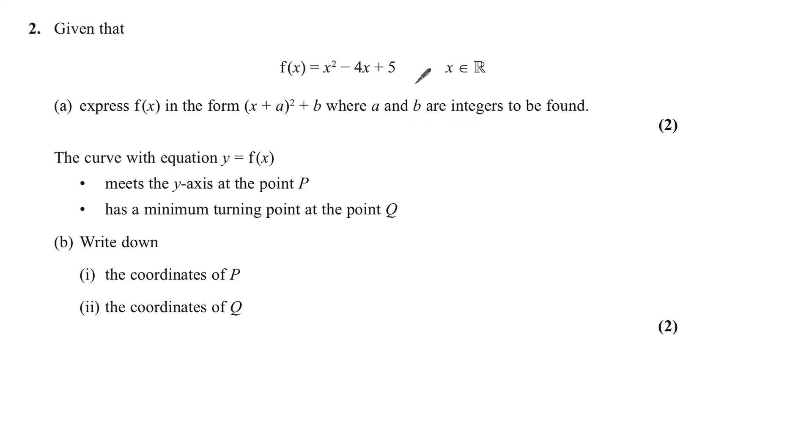So this is the process of completing the square on this expression. We're starting with f of x equals x squared minus 4x plus 5. Now since the coefficient of x squared is 1, we can divide the coefficient of x by 2. This gives us negative 2, which is going to be inside our bracket. So we've got x minus 2 all squared.